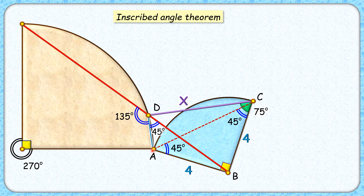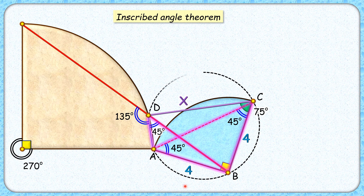Now if you look carefully, AB is a line segment which is subtending an angle of 45 degrees at point C and 45 degrees at point D. By theorem, all four points A, B, C, D will lie on the same circle. So we can basically draw a circle passing through these four points.